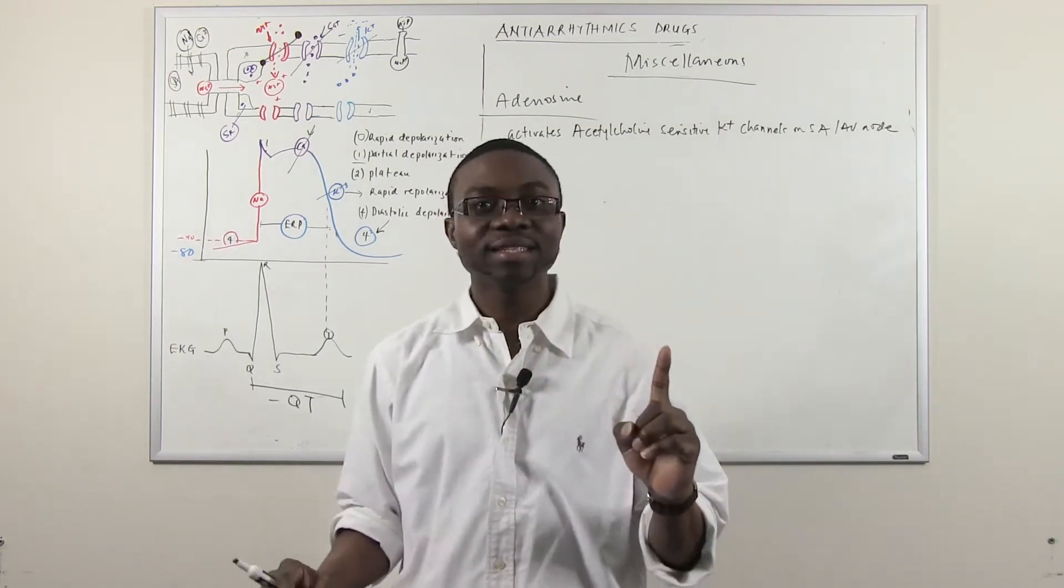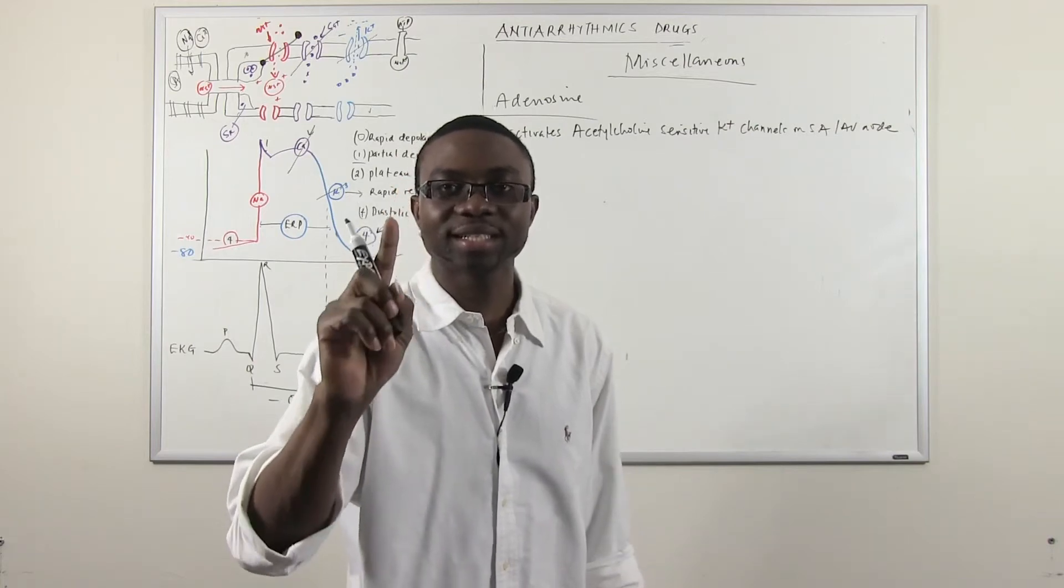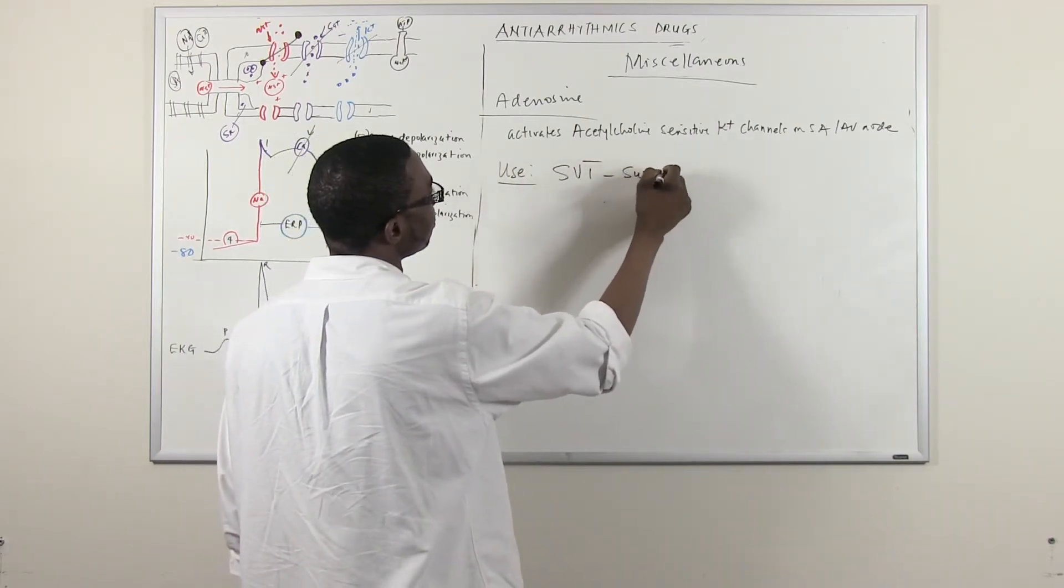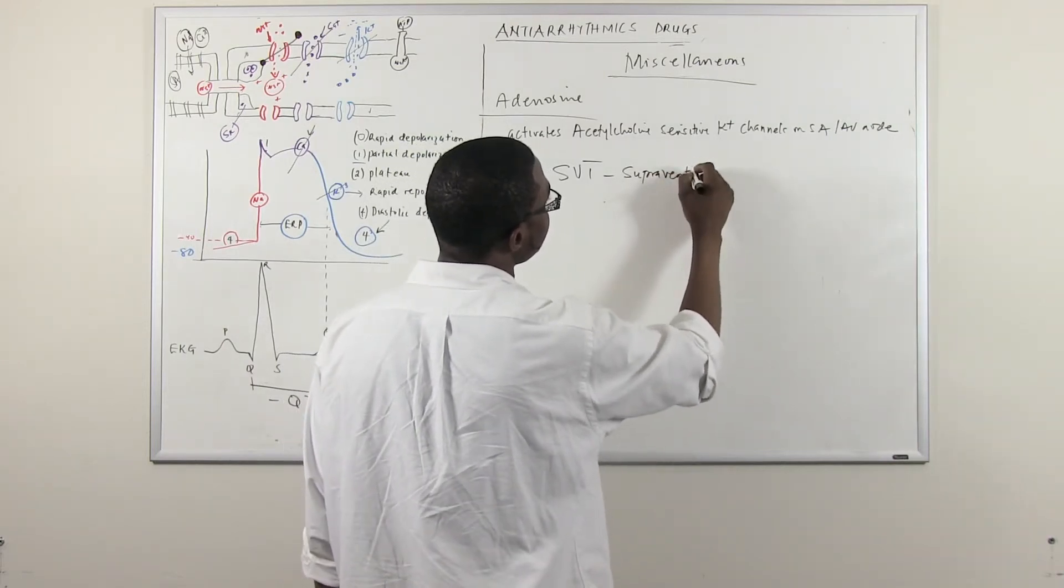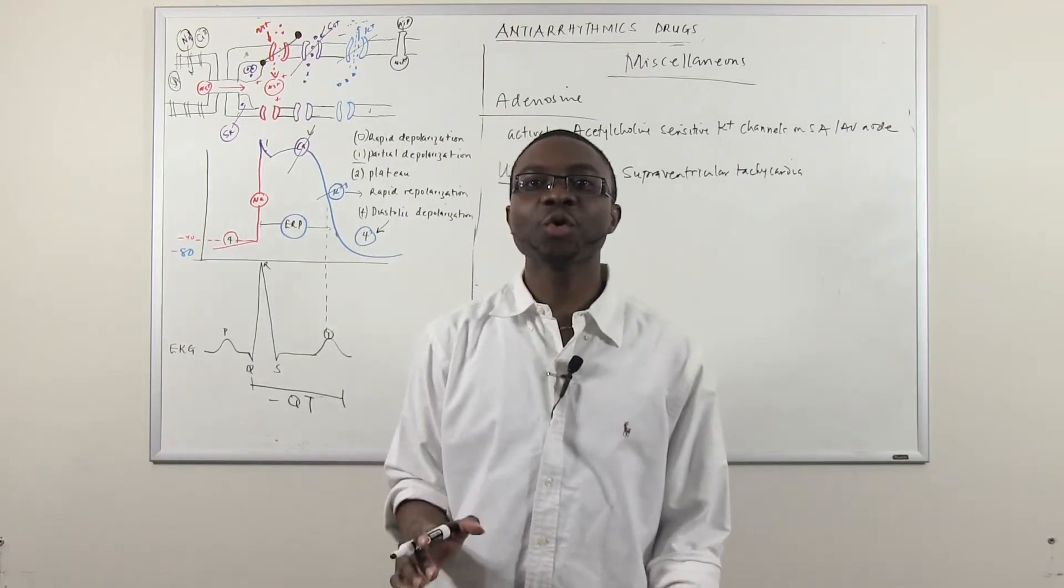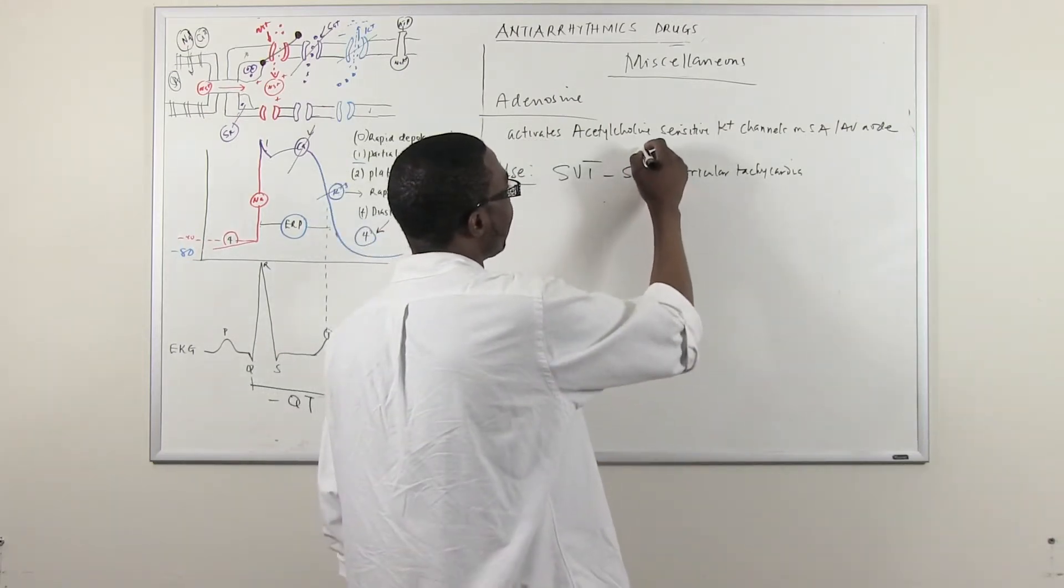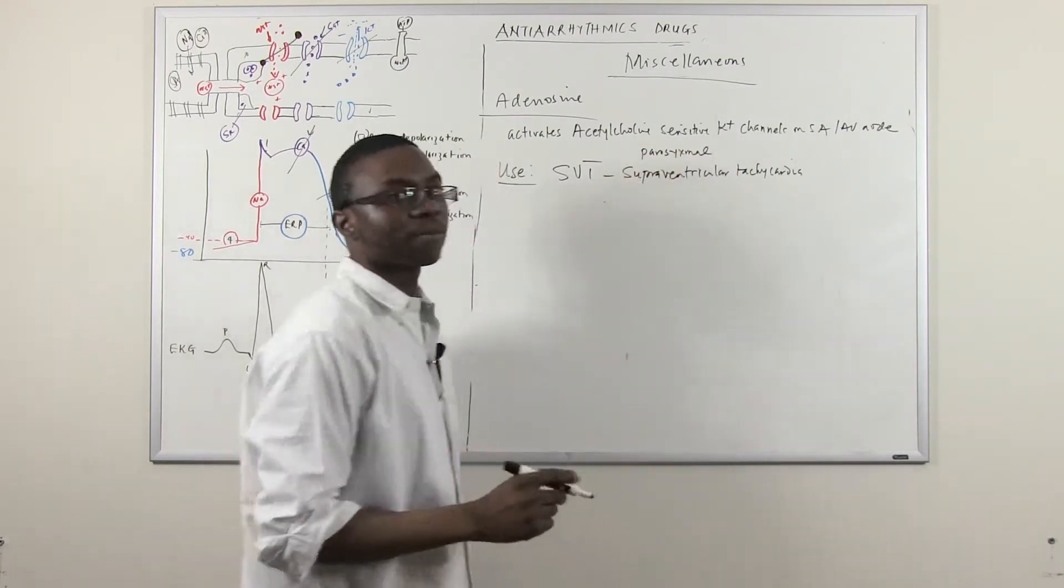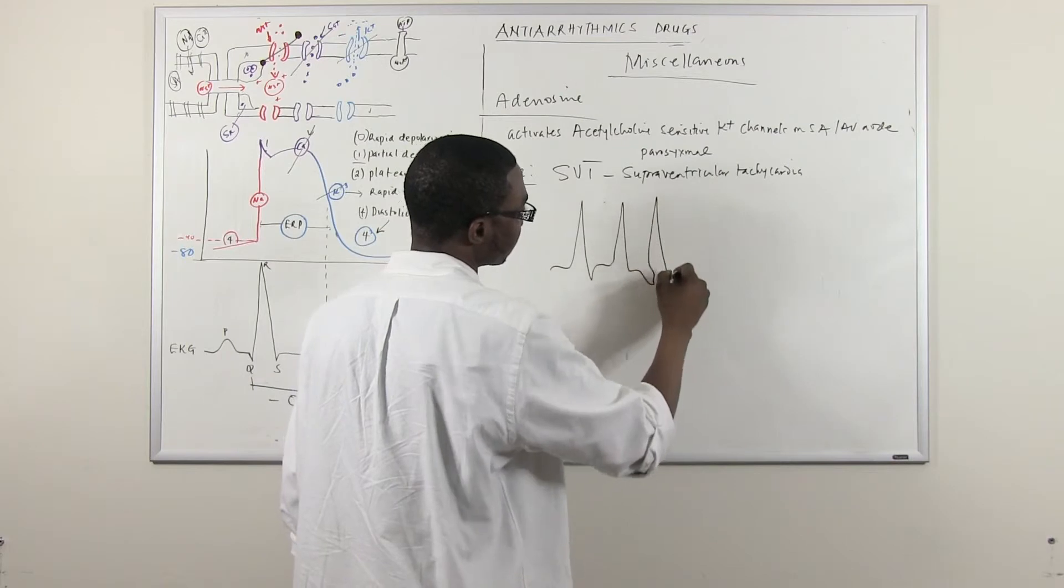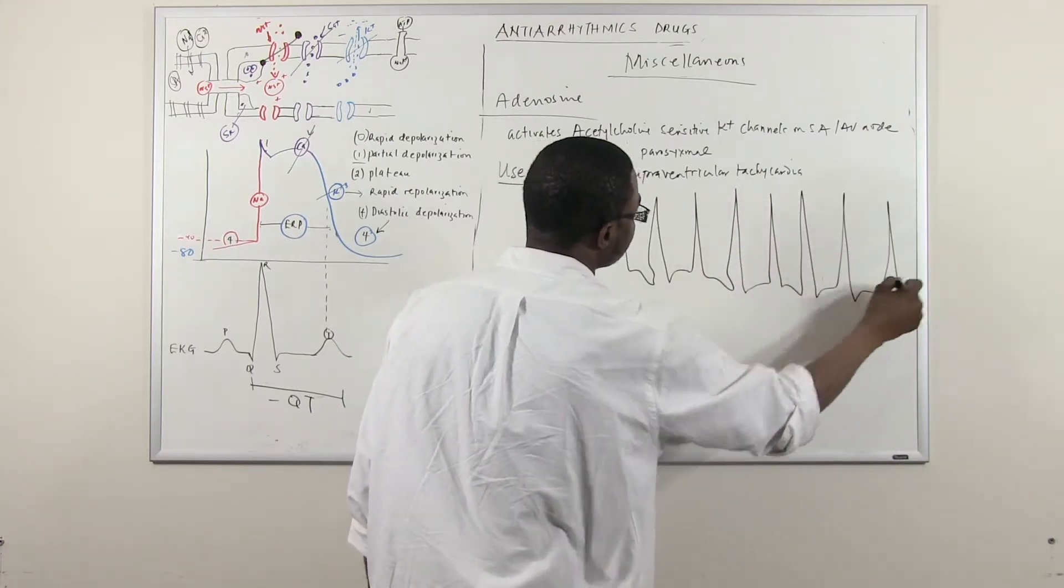Well, this drug only is used to treat one and only thing in medicine. One thing only. That's it. This is the only drug in medicine that you have to memorize for one single disease. It's used to treat SVT, supraventricular tachycardia. That's all you need to know about adenosine. It's used to treat paroxysmal supraventricular tachycardia.